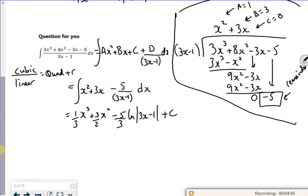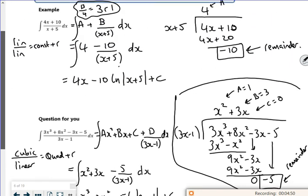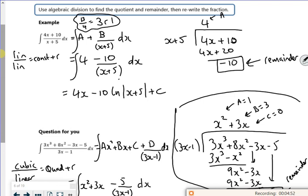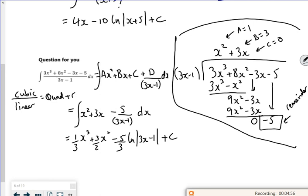And there you've got the same. It's that idea that if I divide linear by linear, it's a constant. So if I divide a cubic by a linear, it's a quadratic with a remainder.